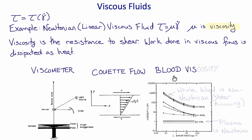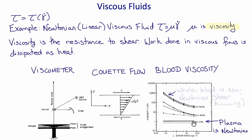This plot shows blood viscosity as a function of shear rate for different hematocrits — different amounts of red blood cells. Plasma, with no red cells, is Newtonian: its viscosity doesn't change with shear rate. However, whole blood, which has about 45% red cells, has a non-constant viscosity which decreases with the shear stress. So whole blood is a non-Newtonian, shear-thinning fluid.